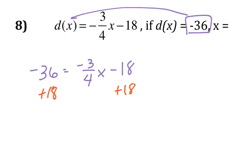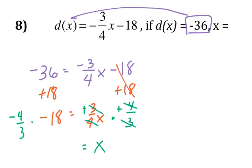And then I have to get rid of the negative 3/4, so that's where I'm going to multiply by the reciprocal. And so negative times negative is positive, the 3's cancel, the 4's cancel, I'm just left with x on the right hand side. On the left, a negative times negative is positive, 4 times 18 divided by 3 turns out to be 24. And so x is equal to 24, and that's my answer.